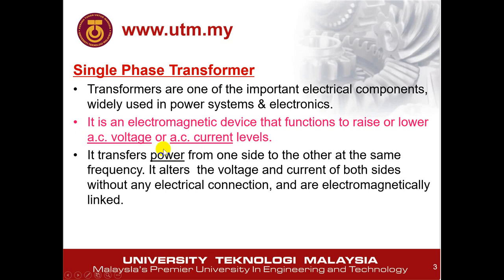If the supply is DC, the transformer doesn't work — only with AC does the transformer work. A transformer can transfer power from one side to another side at the same frequency. If the input side has 50 Hz, the output also has 50 Hz. It doesn't change the frequency.